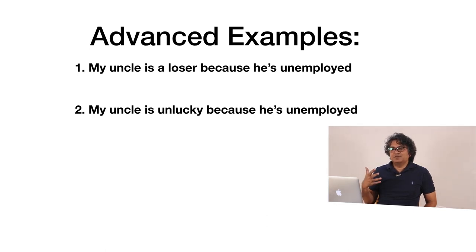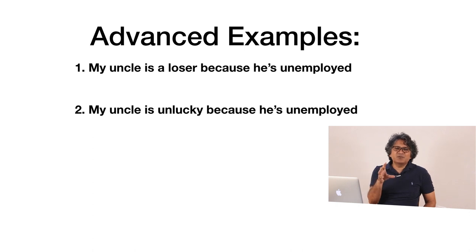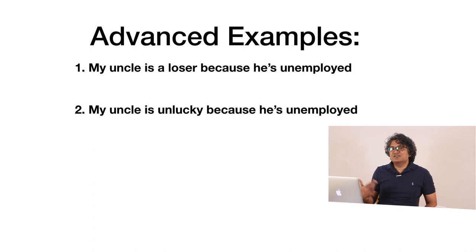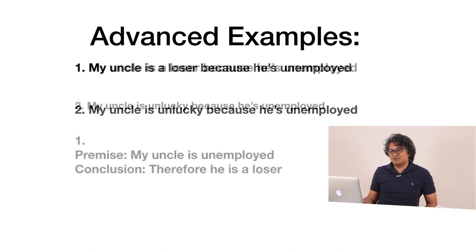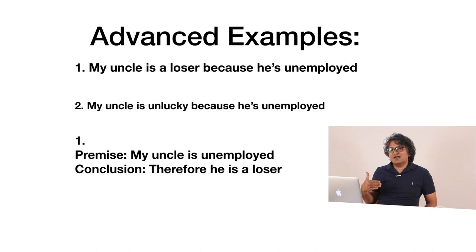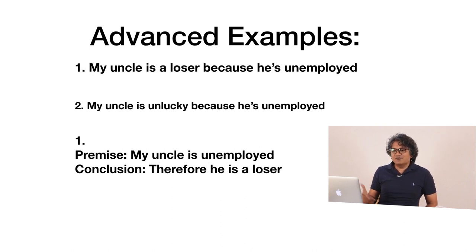In both statements, the word 'because' is the clue. We've already discussed that there are clue words for the conclusion as well as for the premise. Anything after 'because' is obviously a reason — that is the premise. So the premise of the first statement is that my uncle is unemployed. From this reason, the conclusion drawn is 'therefore he is a loser.'